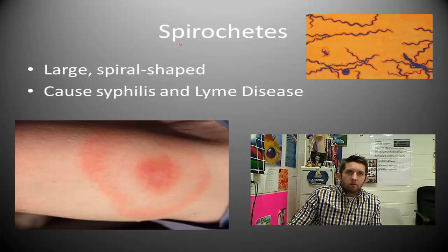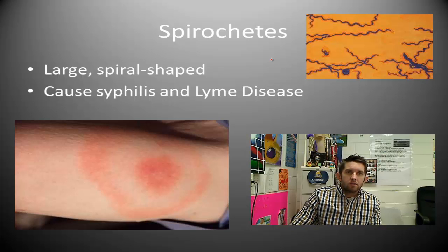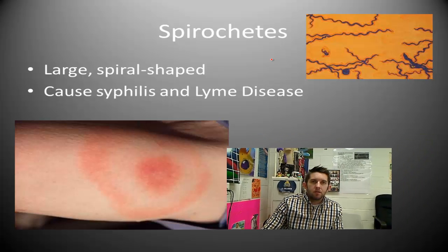Fourth, we have the spirochetes. The prefix spiro indicates that they are spiral-shaped, as shown in the picture in the upper right. They're also large organisms and can cause diseases such as syphilis and Lyme disease.